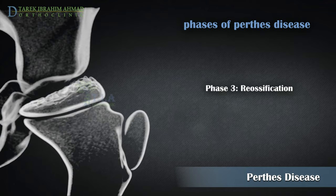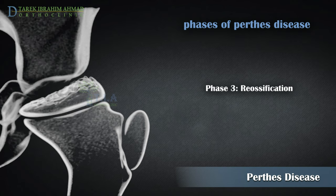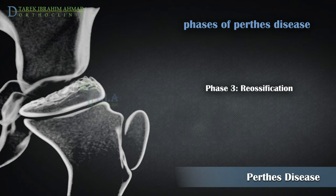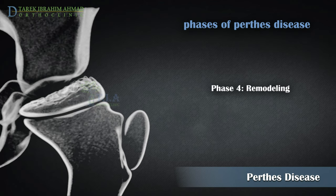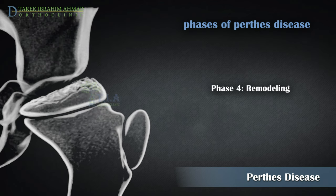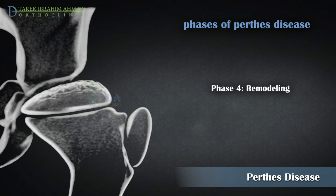Phase three: the re-ossification stage. New, stronger bone develops and begins to take shape in the head of the femur. The re-ossification stage is often the longest stage of the disease and can last from one to three years.